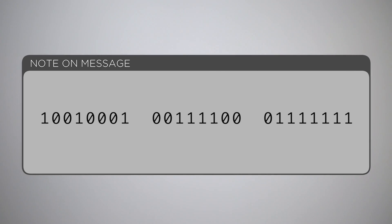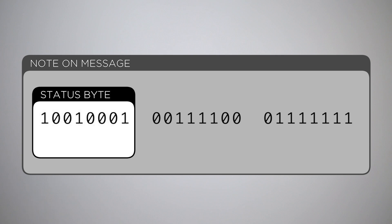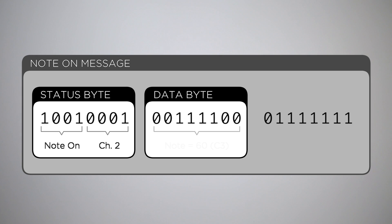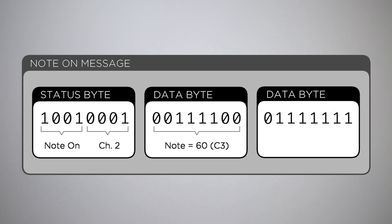A basic MIDI message consists of three bytes, each byte containing 8 bits. For example, let's take a look at a note-on message. The first byte is called a status byte and describes what kind of message is being sent and what channel it's being sent on. The second byte tells us which note is being controlled, and the third byte tells us how hard the note was pressed — this is known as velocity.